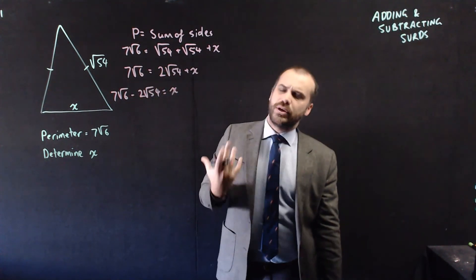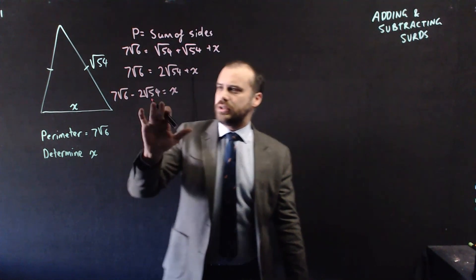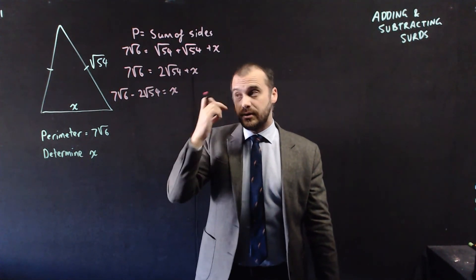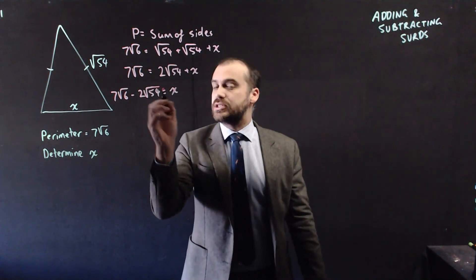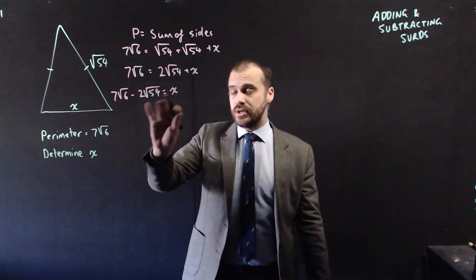So we'll get 7 root 6 minus 2 root 54 equals x. Now we can probably go one step further here because I'm looking at 54 and I'm saying to myself, can that be simplified? What can I think of? 6 times 9 would be 54. So we can simplify that.